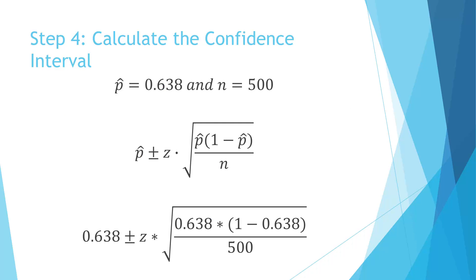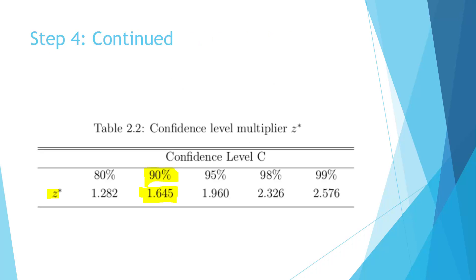We have our p-hat value of 0.638 and our sample size n equal to 500. We plug 0.638 in everywhere we see p-hat and 500 everywhere we see n in the confidence interval formula. Notice we still have the z value — the confidence level multiplier — which we haven't looked up yet. This value comes from a table in your book and also on the next slide. Since we want to construct a 90% confidence interval, we use the z value of 1.645. We don't calculate this; it comes from a table based on the interval percentage.